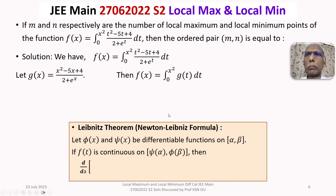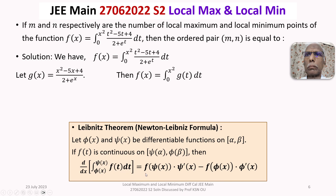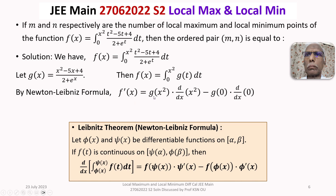Recalling Newton-Leibniz formula: d/dx of integral from φ(x) to ψ(x) of f(t) dt equals f(ψ(x))·ψ'(x) − f(φ(x))·φ'(x). Here the upper function is x² and the lower function is 0. Applying this, f'(x) = g(x²)·(d/dx of x²) − g(0)·(d/dx of 0), giving g(x²) = (x⁴ − 5x² + 4)/(2 + e^(x²)).